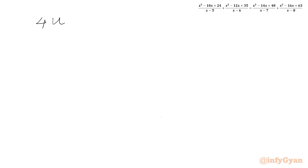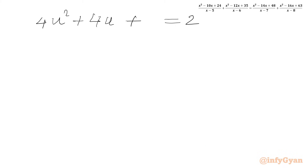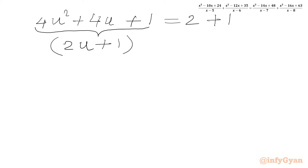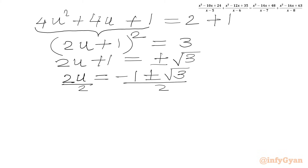Multiplying through to get 4u² + 4u = 2, then adding 1 to both sides gives the perfect square (2u + 1)² = 3. Taking square roots of both sides: 2u + 1 = ±√3. Subtracting 1 and dividing by 2: u = (-1 ± √3) / 2.